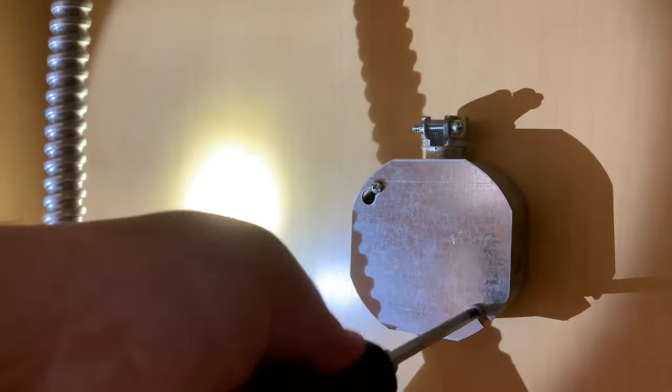First, we loosen up the screws and remove the cover to the electrical box that was installed under the cabinet.